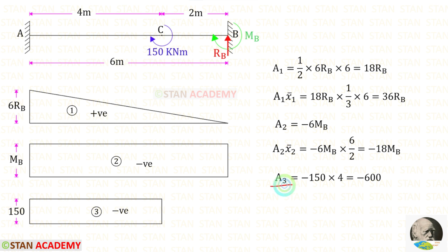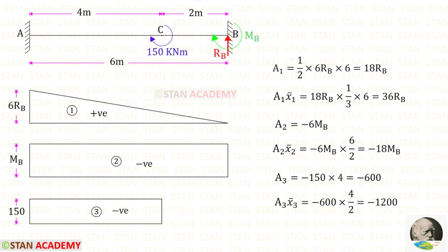Now let us find Area 3. It is also a rectangle. Multiplying 150 by 4 gives the area. Since it is a negative diagram we apply a negative sign, so Area 3 = −600. For the centroid distance x̄₃, in the rectangle the centroid lies at the center: 4/2 = 2. Therefore Area 3 × x̄₃ = −600 × 2 = −1200.